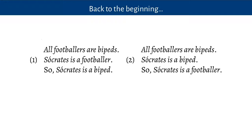Consider these two arguments. The first one says all footballers are bipeds, Socrates is a footballer — those are two premises — and the conclusion is Socrates is a biped. This seems to be a good bit of reasoning in that if the two premises are true, if all footballers really are bipeds and Socrates really is a footballer, then the conclusion that Socrates is a biped has got to be true.